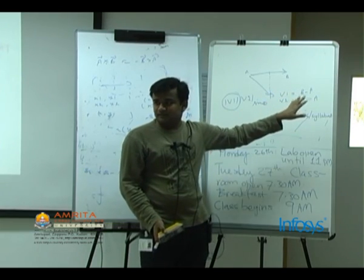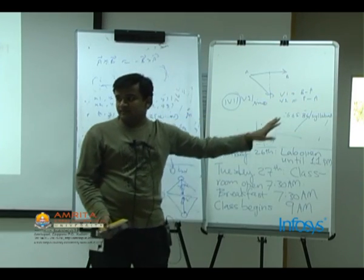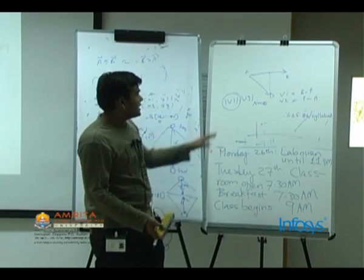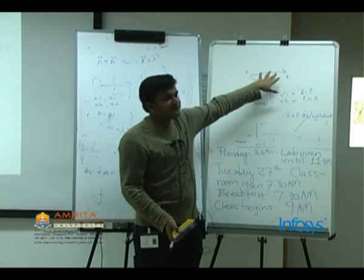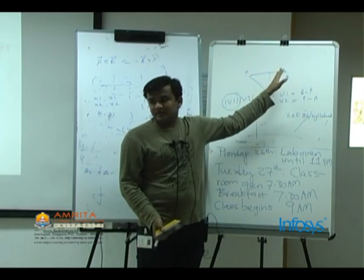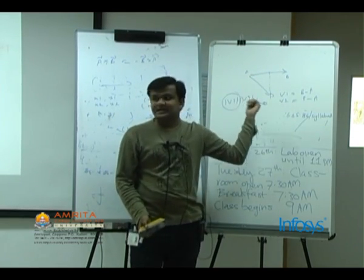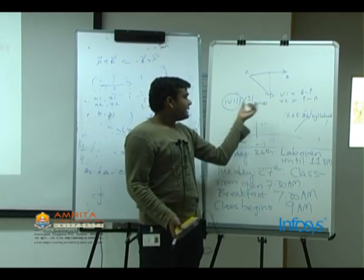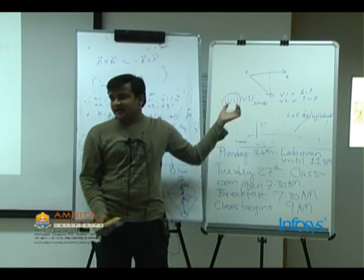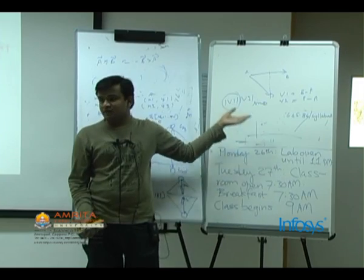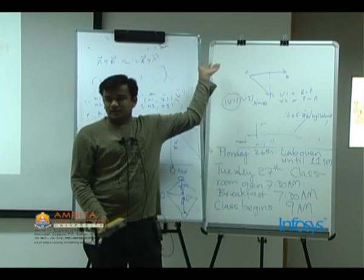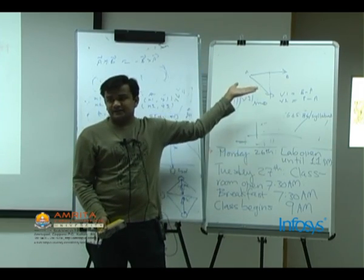We can divide with it. As long as we have a proper line, we can get distance by taking the cross product and dividing by the magnitude of the line vector.